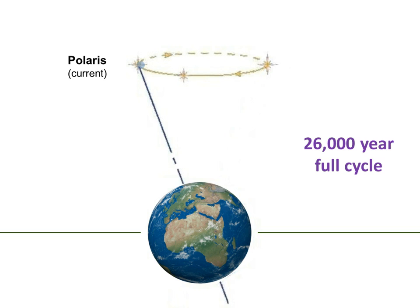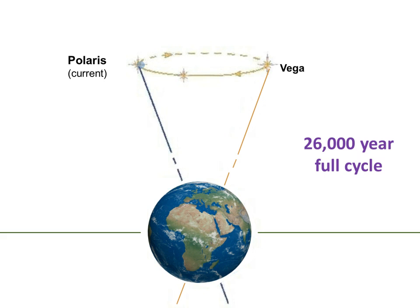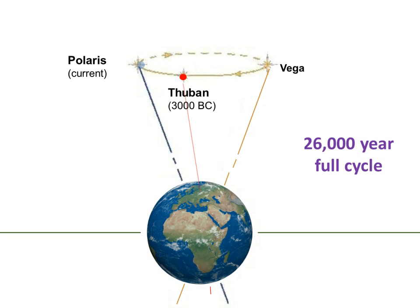So at the moment it's Polaris, but about 14,000 years ago it could have been Vega, and with about 3,000 BC, they reckon it was Thuban. However, Dhruvaloka, which is also called the pole star — could that indeed be a subtle planet where, no matter which way the Earth is leaning, it's actually still there as the pole star?